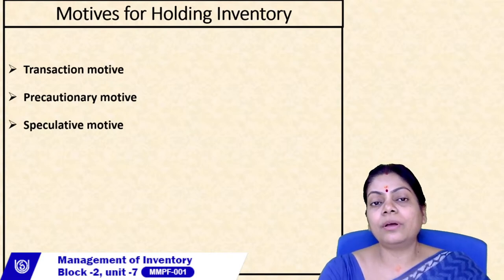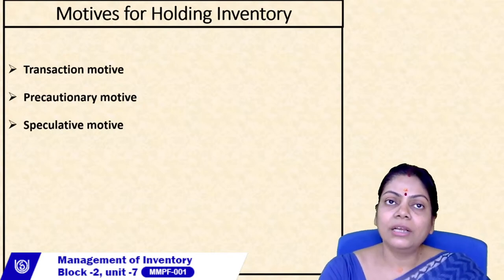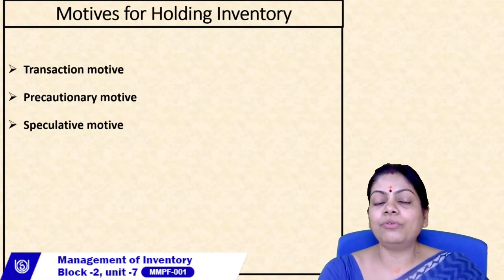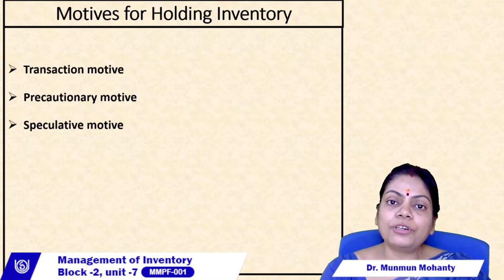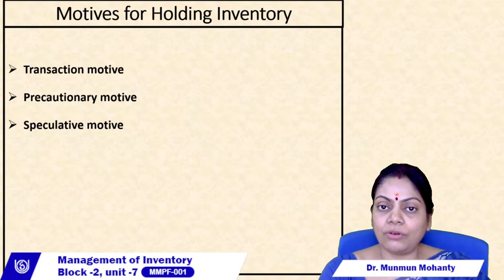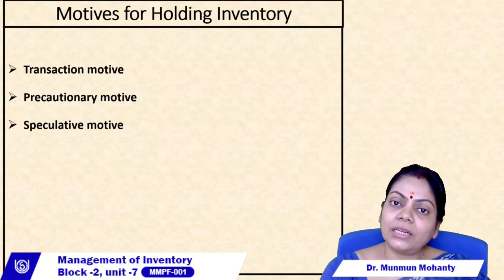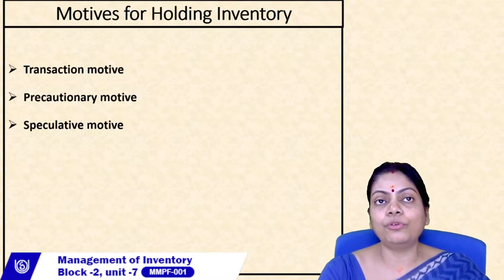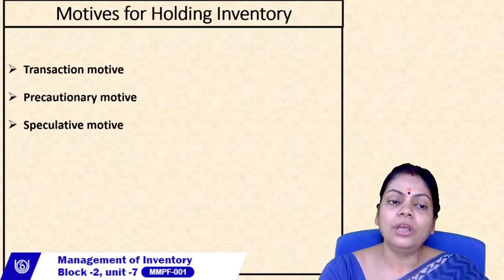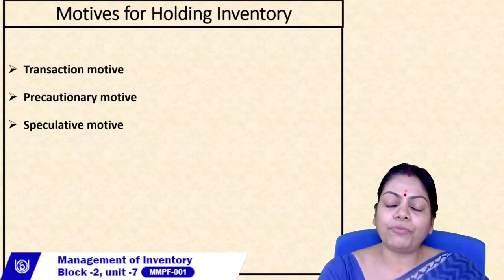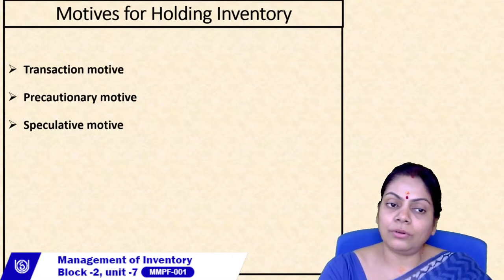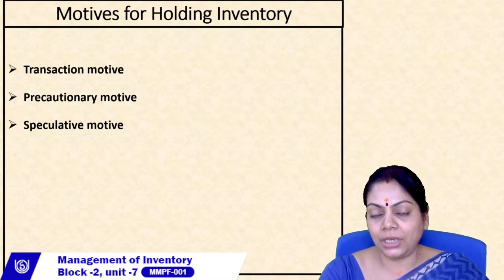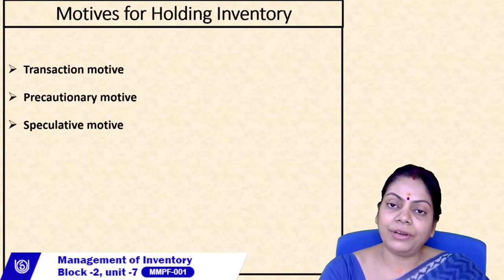The third is the speculative motive — trying to make profit through inventory holding. If your supplier offers a lucrative discount on a purchase of 2,000 units when you only need 500, you might take advantage of that discount. Similarly, if you know inventory costs are going to rise in future, you buy more today. Buying raw material with a profit-making motive is the speculative motive. The transaction and precautionary motives are essential, but there is no harm in holding inventory for speculative purposes as well.